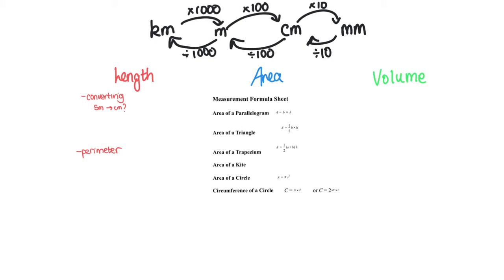What questions will you get in regards to length? You'll get converting questions where it says you've got five metres — what would that be in centimetres? The way you do this is to look for the unit you're in at the moment, which is metres, and look for the unit you want to convert to, which is centimetres. What you need to get there is to multiply by a hundred. So you would go five times a hundred equals five hundred centimetres. Units are very important in this topic, so don't forget to include them.